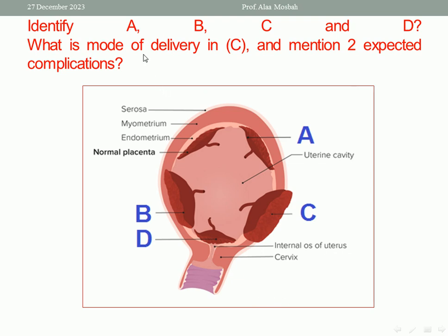What is the mode of delivery in C? In C, this is the most dangerous type of the placenta accreta spectrum, which is placenta percreta. The mode of delivery is by elective cesarean section, which will be followed, mostly, by hysterectomy.